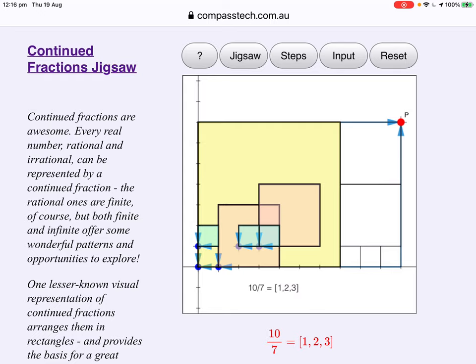This jigsaw, you know, the first one is actually guiding. So, it shows students where to place the tiles. And it also shows them the result. This represents the number 10 over 7. It's continued fraction, from largest square down to smallest, 1, 2, 3.